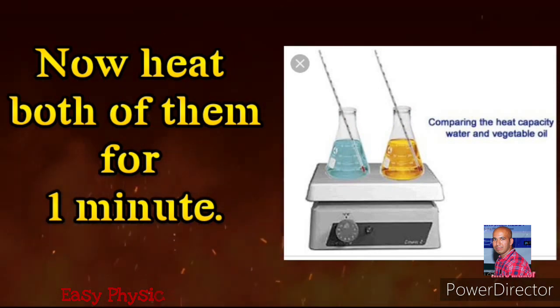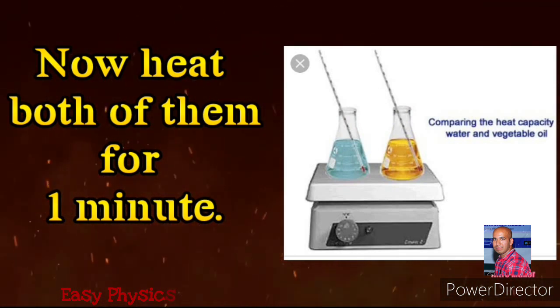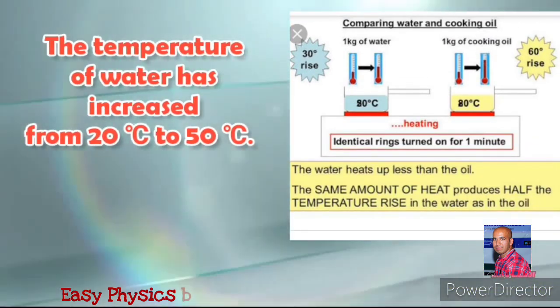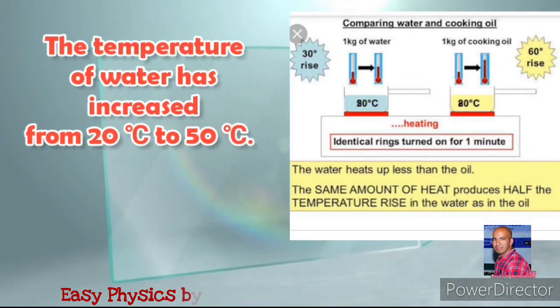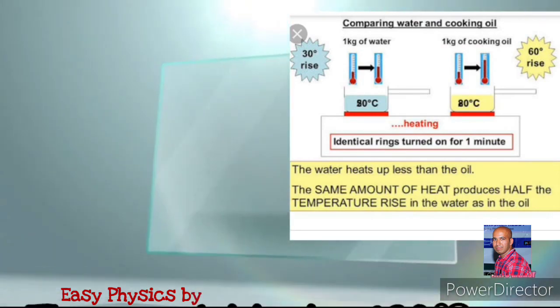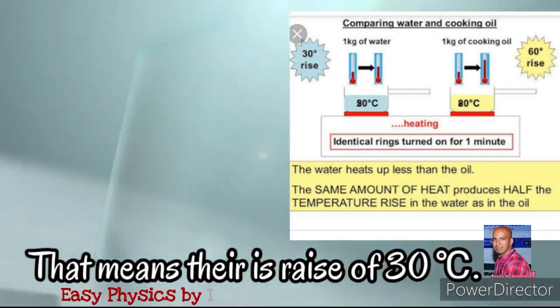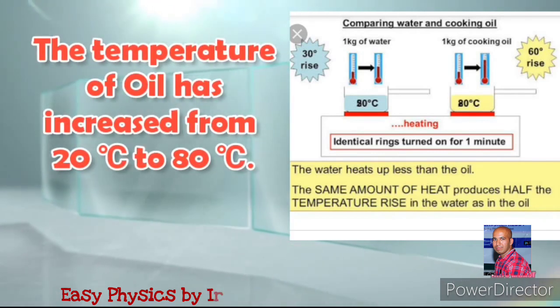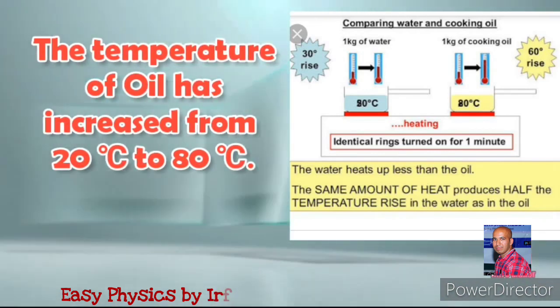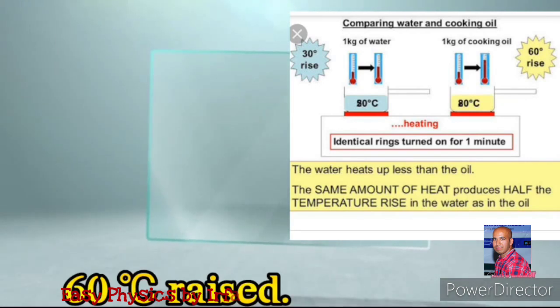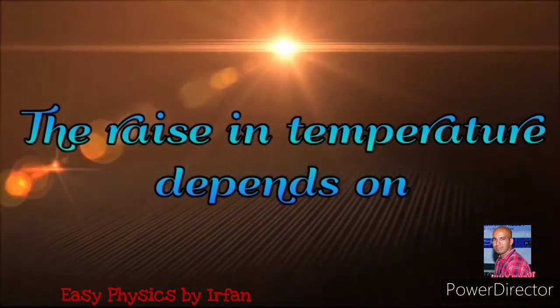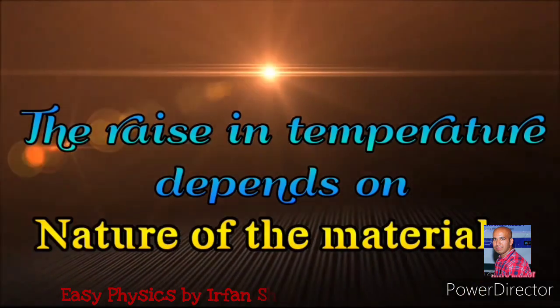Now let us observe how much temperature has risen in both. The water has increased from 20 degrees to 50 degrees — a rise of 30 degrees centigrade. The oil has increased from 20 degrees centigrade to 80 degrees centigrade — a rise of 60 degrees. So the rise in temperature depends on the nature of the material.